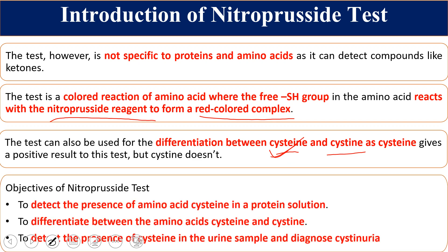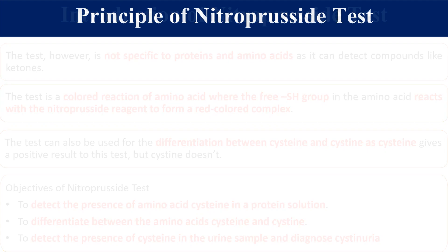The objective of this test is the detection of the presence of the amino acid cysteine in any protein or protein solution. This test can also be used for differentiation between cysteine and cystine. Additionally, this test can be used for detection of cysteine in urine samples — that is, detection of cystinuria, where cysteine appears in the urine of a diseased person.